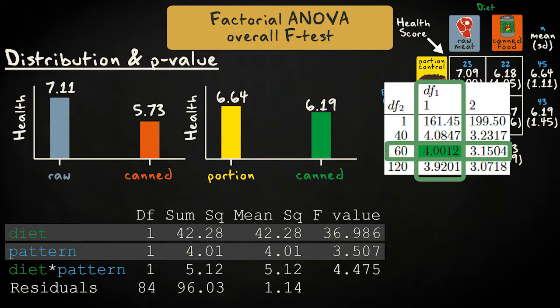Using a table, we find the critical F value with 1 and 60 degrees of freedom is also 4.0012 for diet and feeding pattern, since they both happen to have the same numerator degrees of freedom as the interaction term.